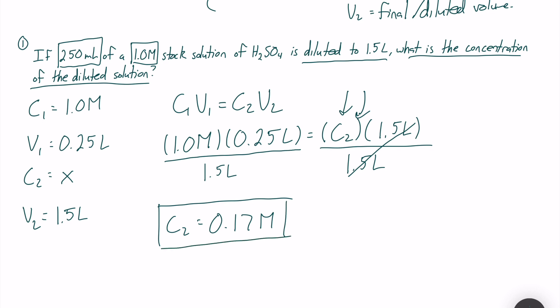Your C2 with significant figures should be 0.17 molar. Do not forget your units. Remember moles per liter is molar, so make sure you're at 0.17 as we should have two significant figures according to our question. That is example number one.